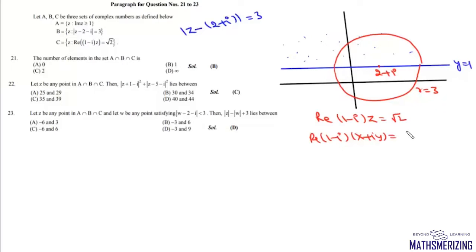it is equal to root 2 and its real part is x plus y. So this third locus is a straight line which is given by x plus y equals root 2. So it will be this straight line which is x plus y equals root 2.